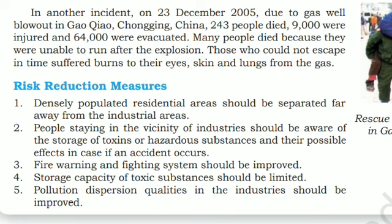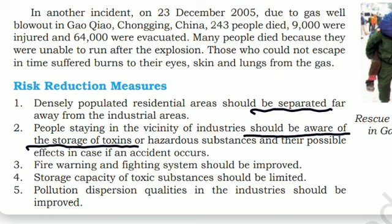Risk reduction measures: Densely populated residential areas should be separated far away from industrial areas. People staying in the vicinity of industries should be aware of the storage of toxins or hazardous substances and their possible effects in case of an accident. Fire warning and fighting systems should be improved. Storage capacity of toxic substances should be limited. Pollution dispersion qualities in the industry should be improved.